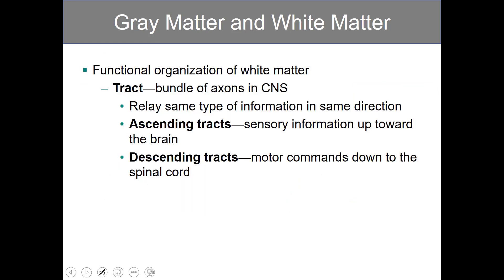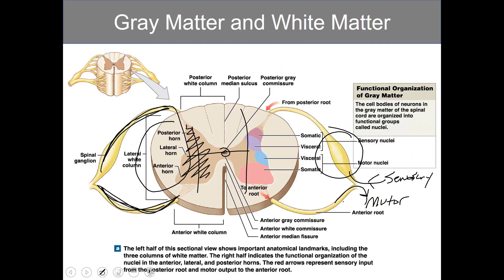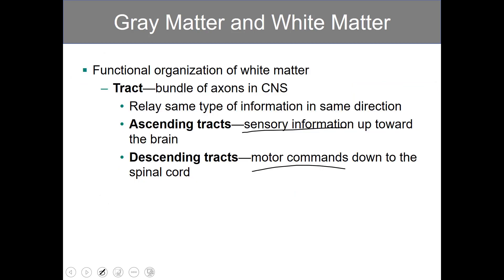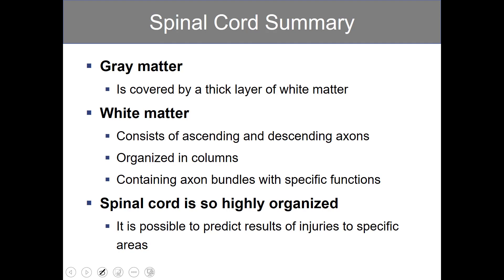White matter is organized into tracks — bundles of axons within the central nervous system that relay the same type of information in the same direction. Ascending tracks carry sensory information, while descending tracks carry motor commands. The white matter is organized into a posterior white column, an anterior white column, and a lateral white column. The spinal cord is so highly organized that it's possible to predict the results of injuries if you know where the damage occurs.